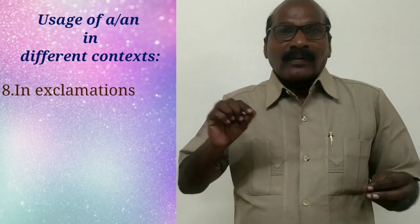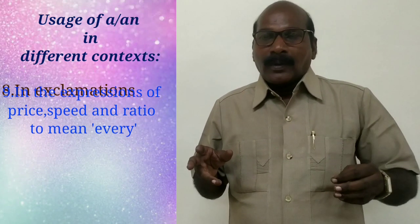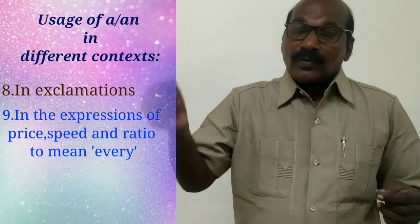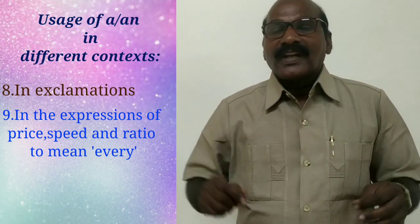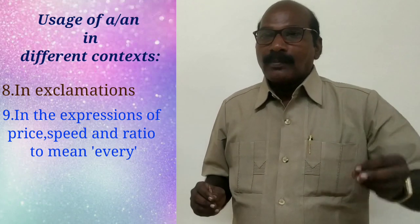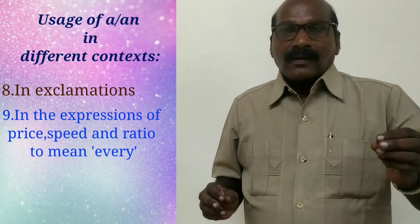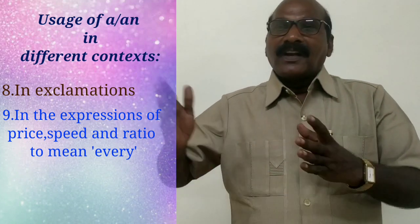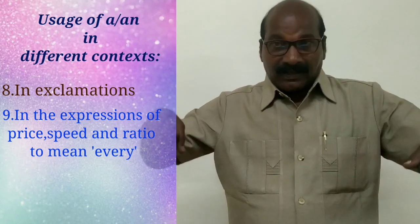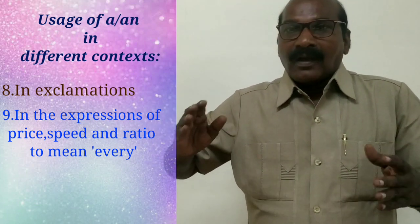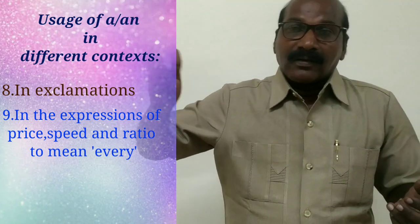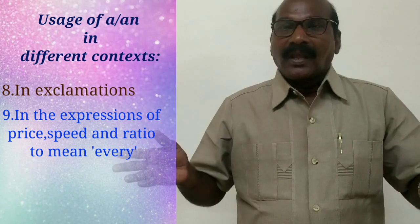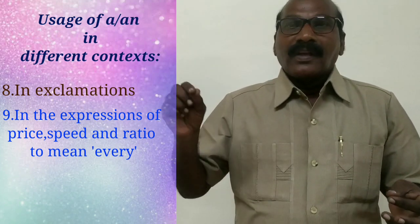To refer to expressions of price, speed, and ratio — where it means 'every' — we use the indefinite article. For instance: 'I want bananas for 50 rupees a dozen' (every dozen). 'I can ride my bike at 50 miles an hour' (every hour). 'I take food three times a day' (every day).